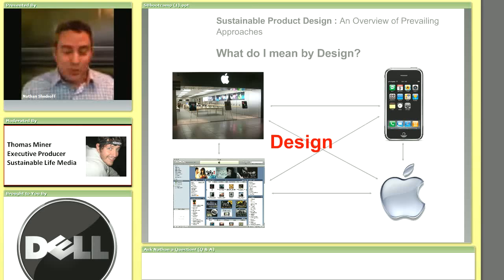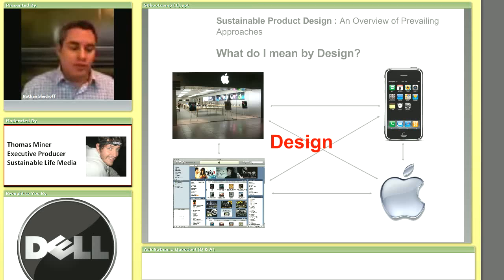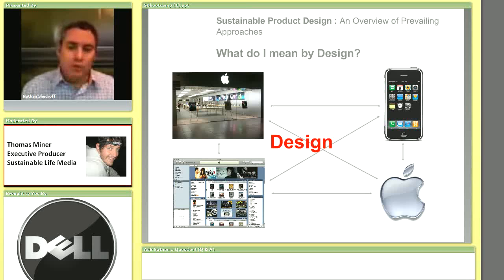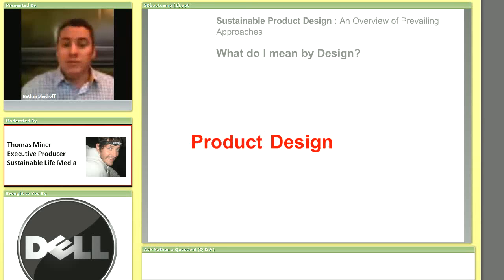A really good shorthand example that everyone uses is Apple. Apple has pushed their design and their approach to sustainability into everything they do — whether it's a retail environment, a product, or a service — and they get it all working together in an ecosystem that's incredibly effective. So if you ever need an example of who's doing this well, Apple is a really good one.